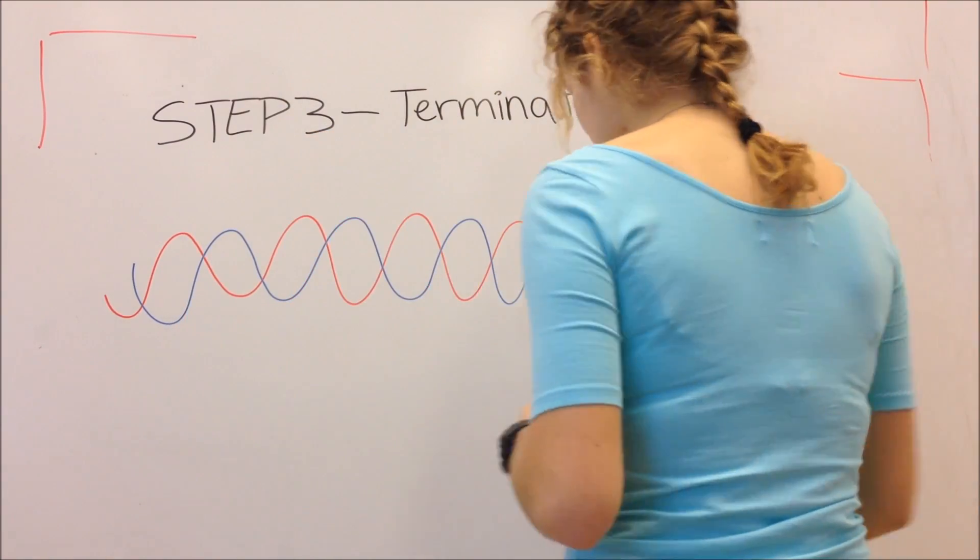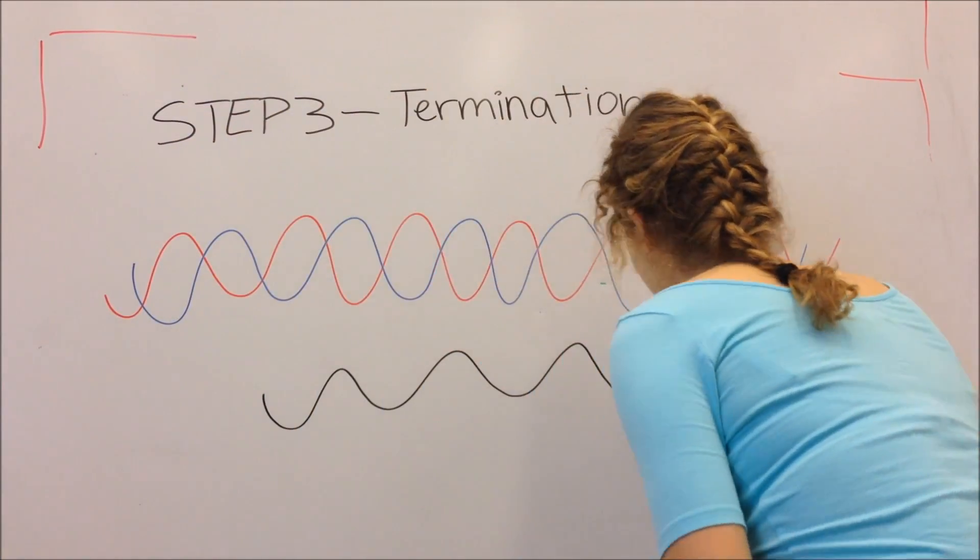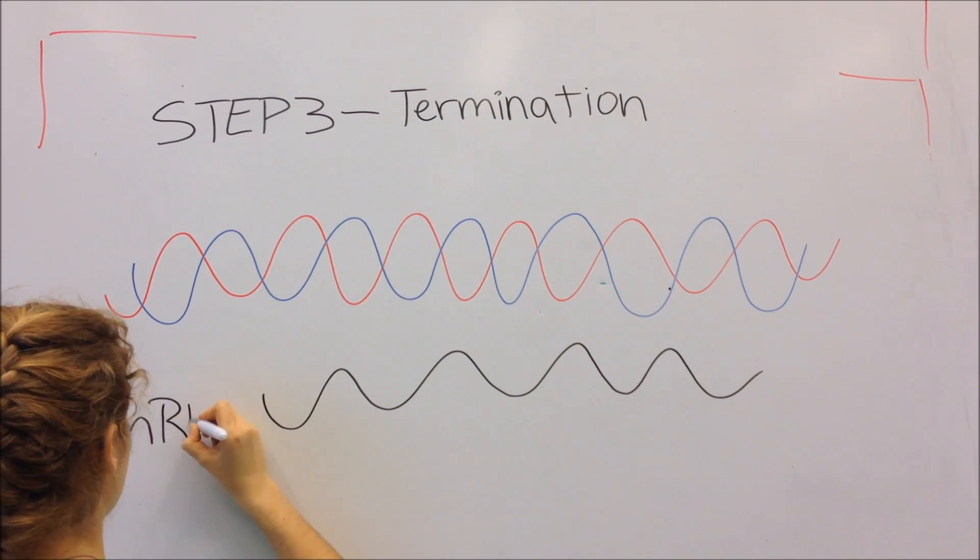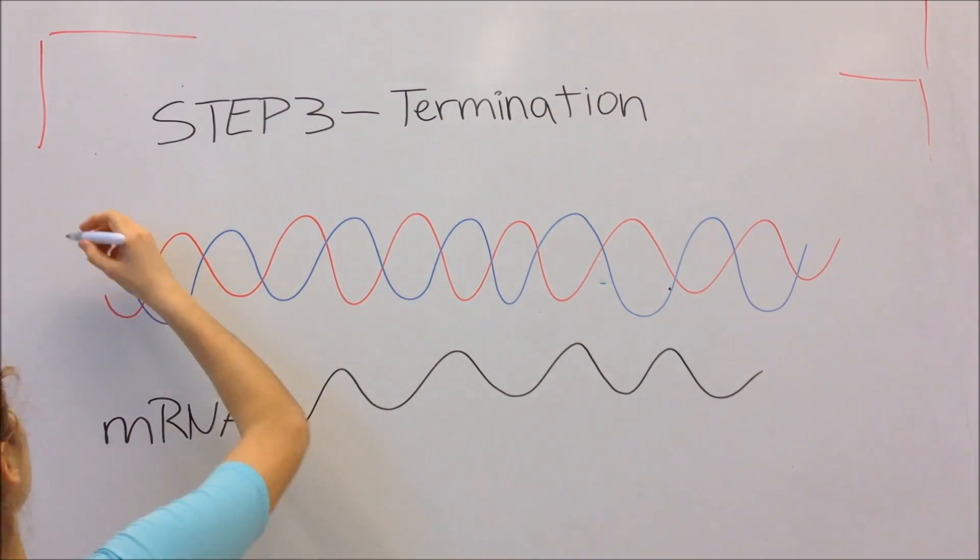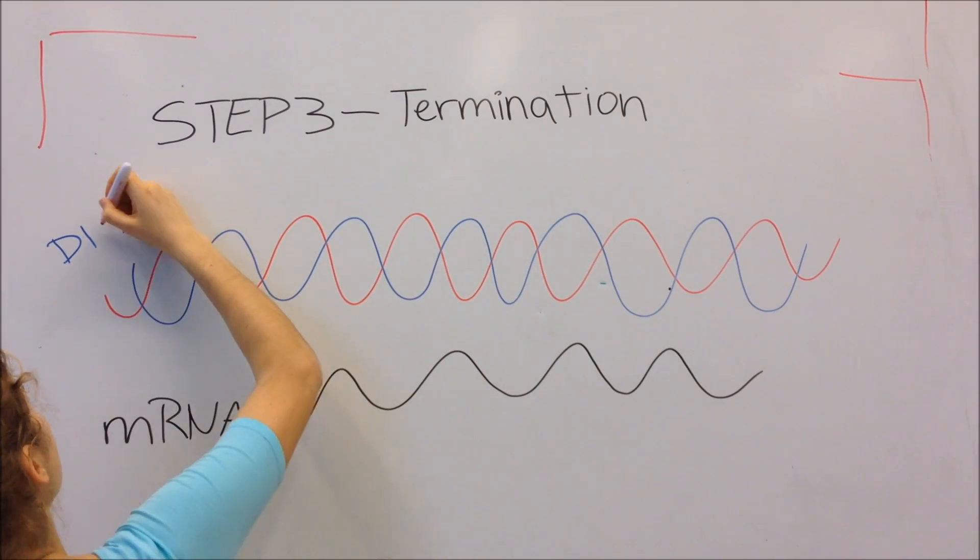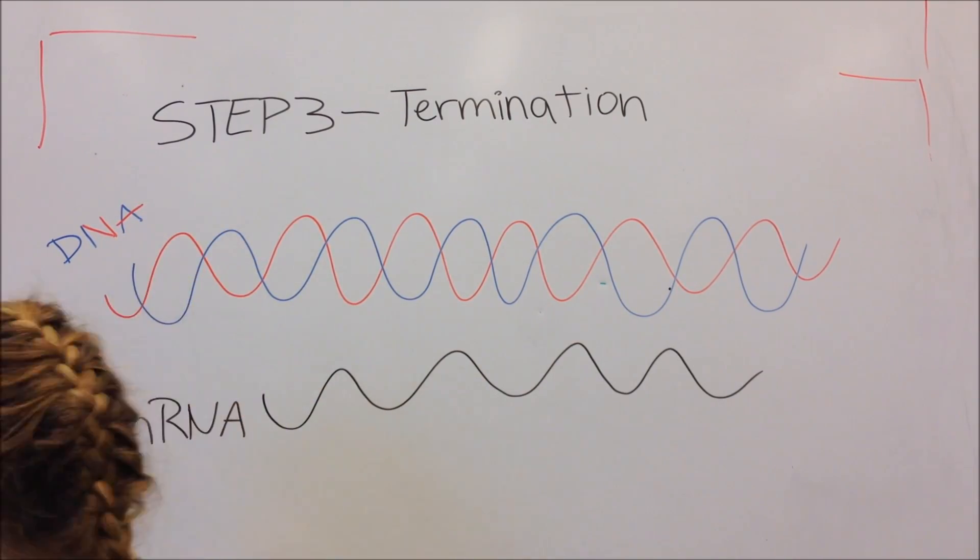When RNA polymerase reaches the termination site, it detaches from the DNA and DNA zips together once again. With RNA polymerase, messenger RNA also gets separated from the DNA as a long chain and goes off to do translation somewhere else, or leaves the nucleus.